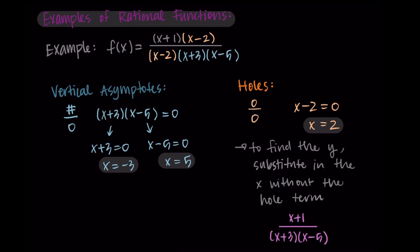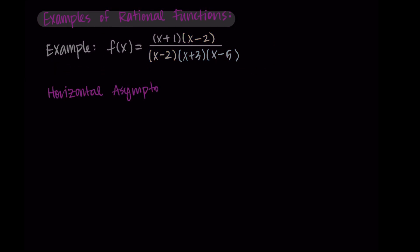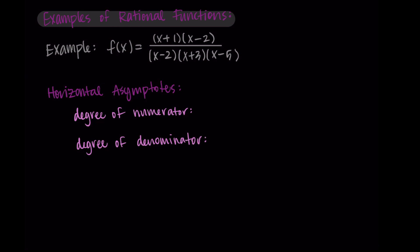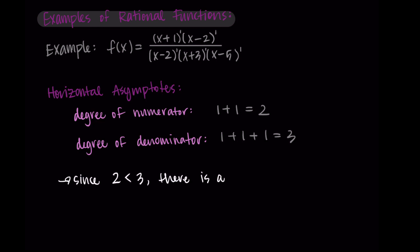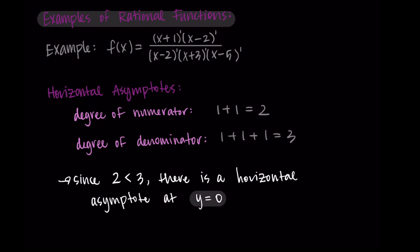Those are the vertical asymptotes and the holes. Now let's find the horizontal asymptotes. We need to look at the degree of the numerator and the degree of the denominator and compare them. We add the exponents on each factor: in the numerator, 1 plus 1 gives degree 2, and in the denominator, 1 plus 1 plus 1 gives degree 3. Since the degree of the numerator, 2, is less than the degree of the denominator, 3, there is a horizontal asymptote at y equals 0.